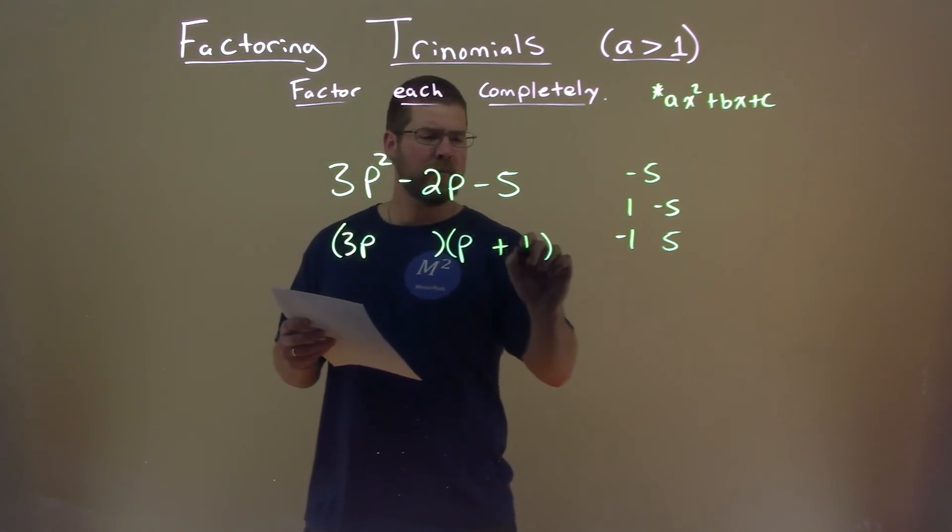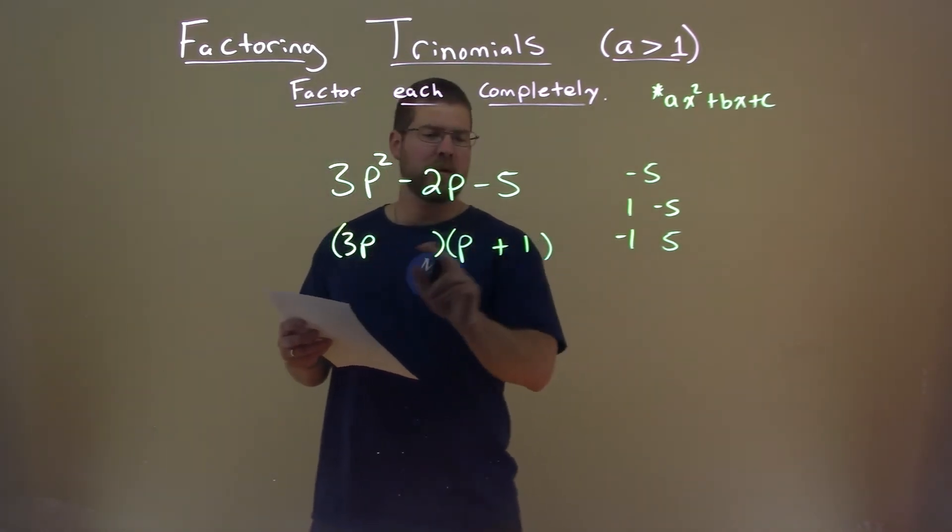Well, if I put a 1 here, we know if we FOIL it, 3p times 1 gives me 3p.